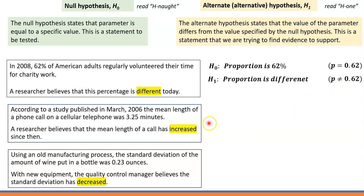Let's try it with the second example. First, let's determine what parameter we're working with. It says the mean length — that's the parameter — the mean length of a phone call on a cellular telephone was 3.25 minutes. That's the parameter of population mean.